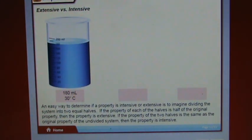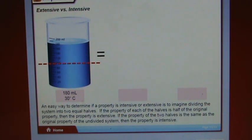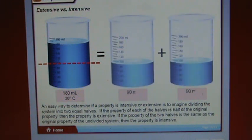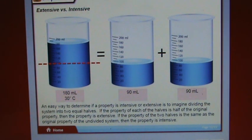An easy way to determine if a property is intensive or extensive is to imagine dividing the system into two equal halves. If the property of each half is half of the original, then the property is extensive. If the property of the two halves is the same as the original undivided system, then the property is intensive.